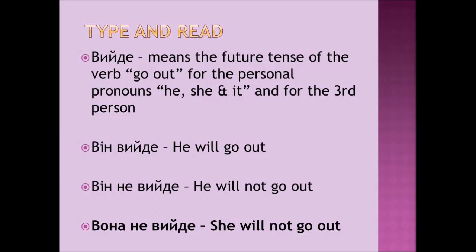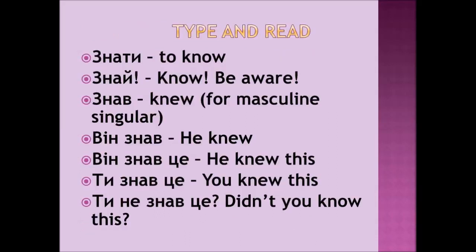Now, almost the last section. The verb 'to know' in Ukrainian is ЗНАТИ. The imperative form of this verb is ЗНАЙ. ЗНАЙ means literally 'know,' but generally it means 'be aware of something.' The past form for masculine singular is ЗНАВ — ЗНАВ means 'knew.' For example: ВІН ЗНАВ — he knew. ВІН ЗНАВ ЦЕ — he knew this.